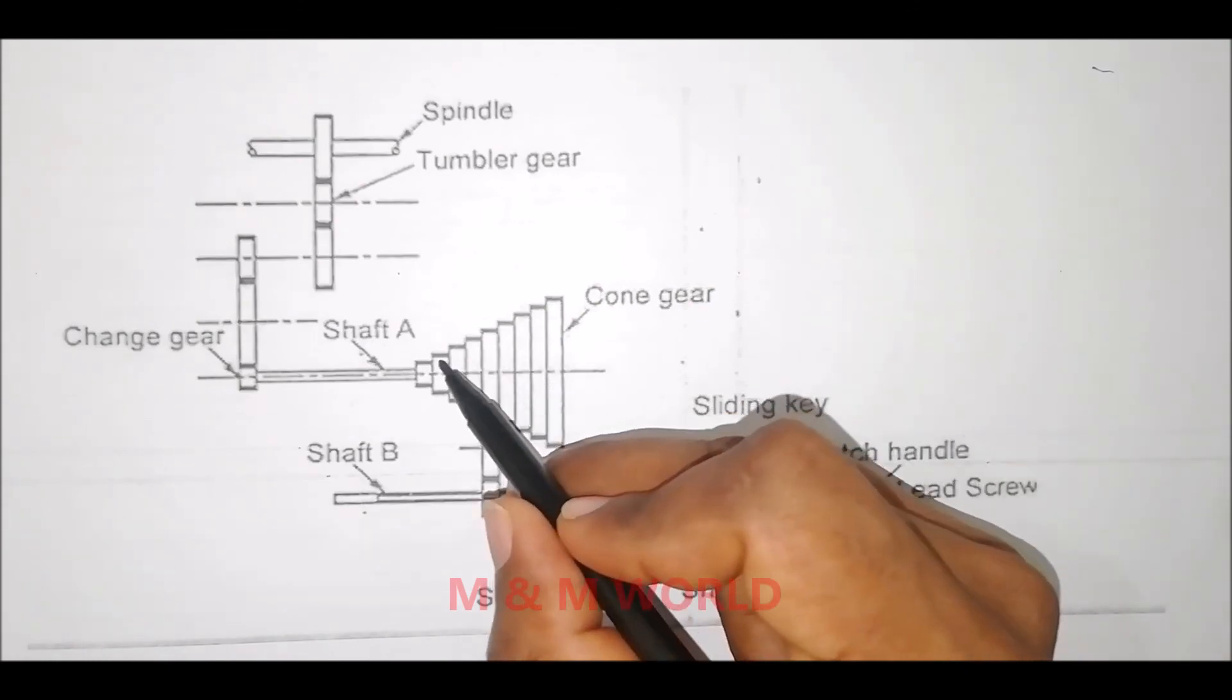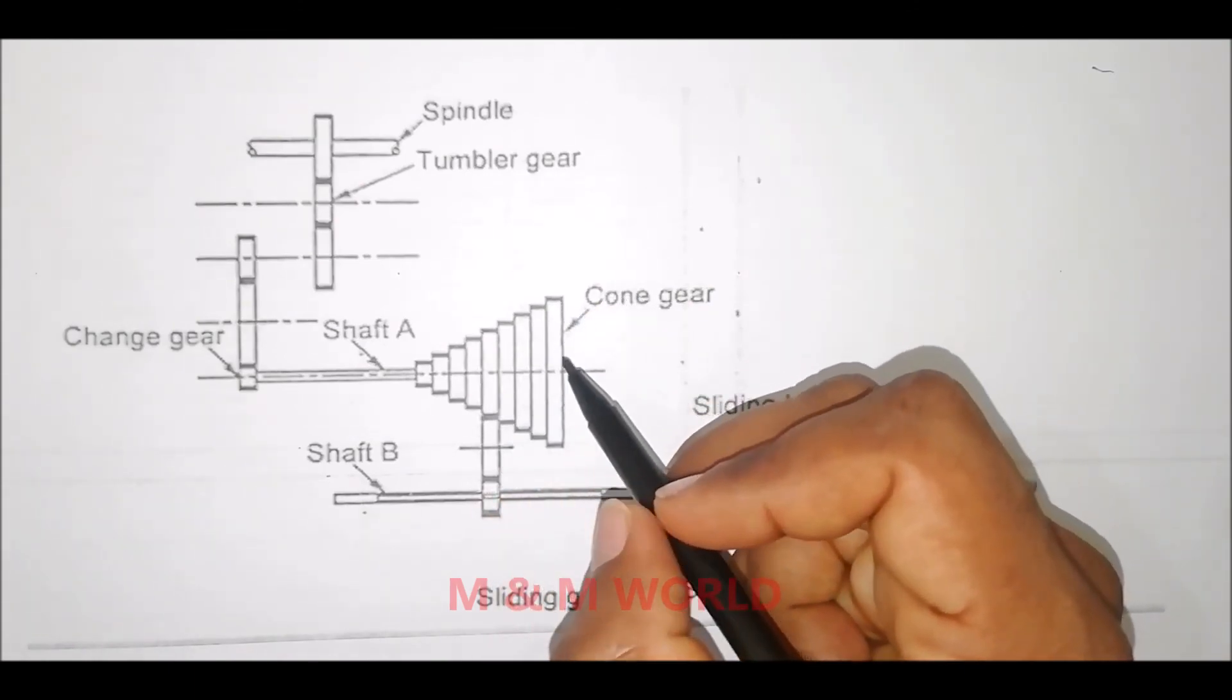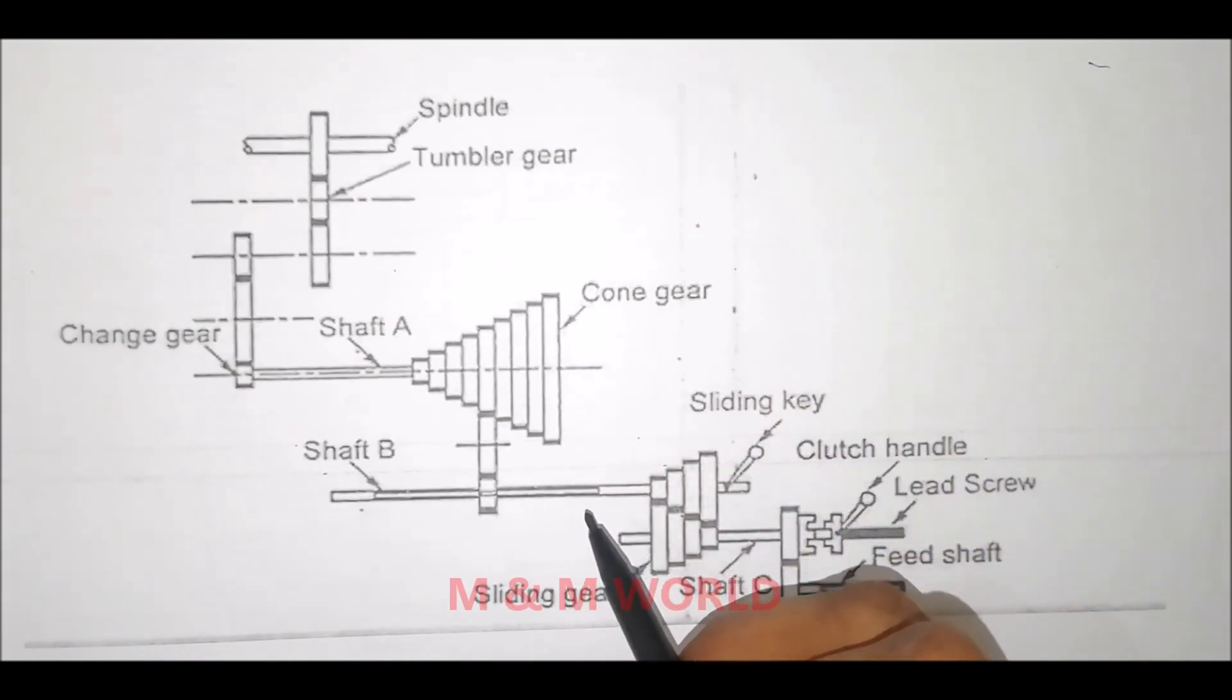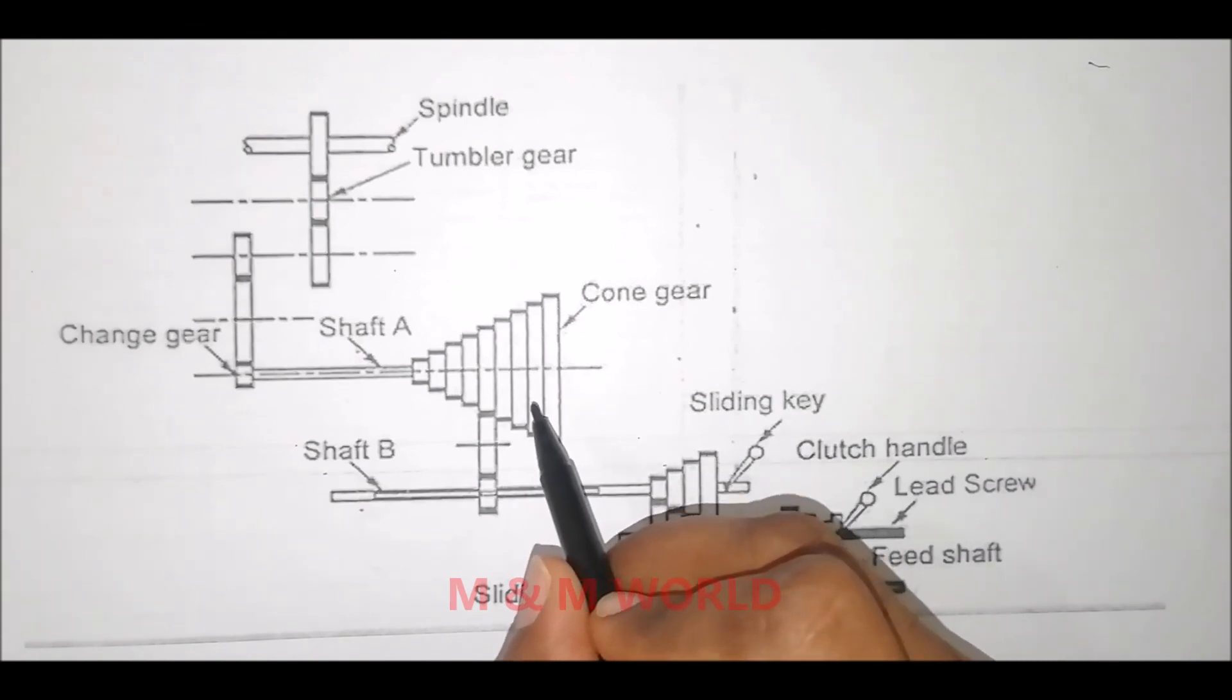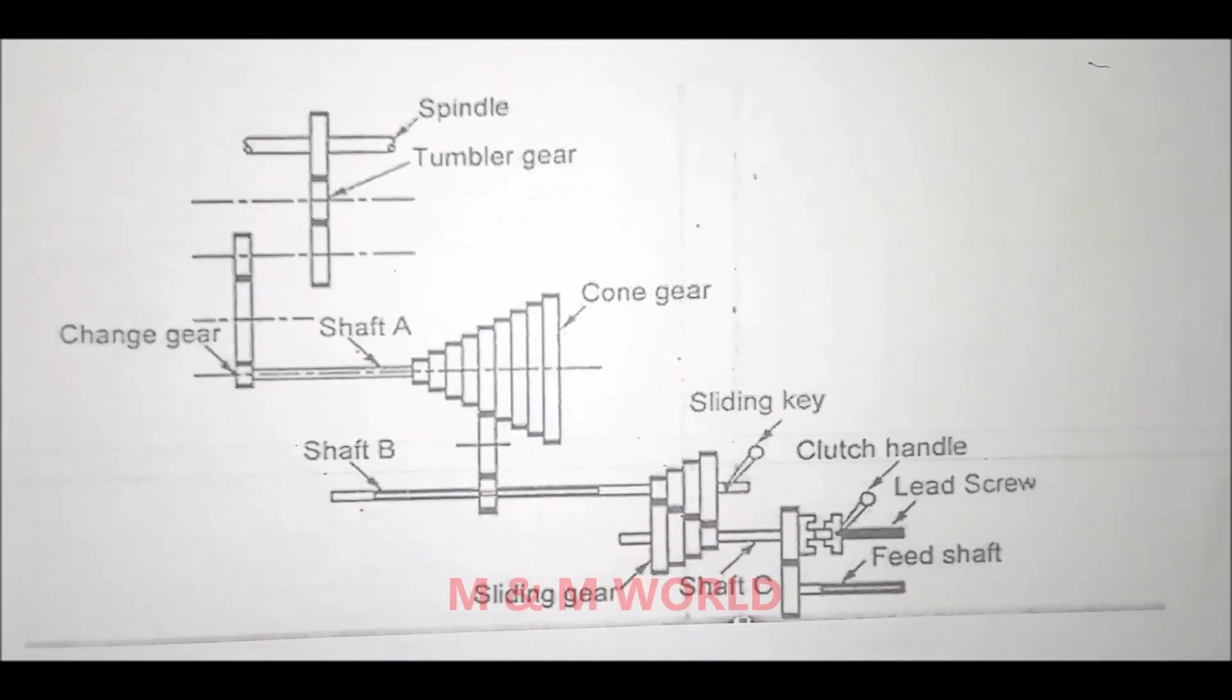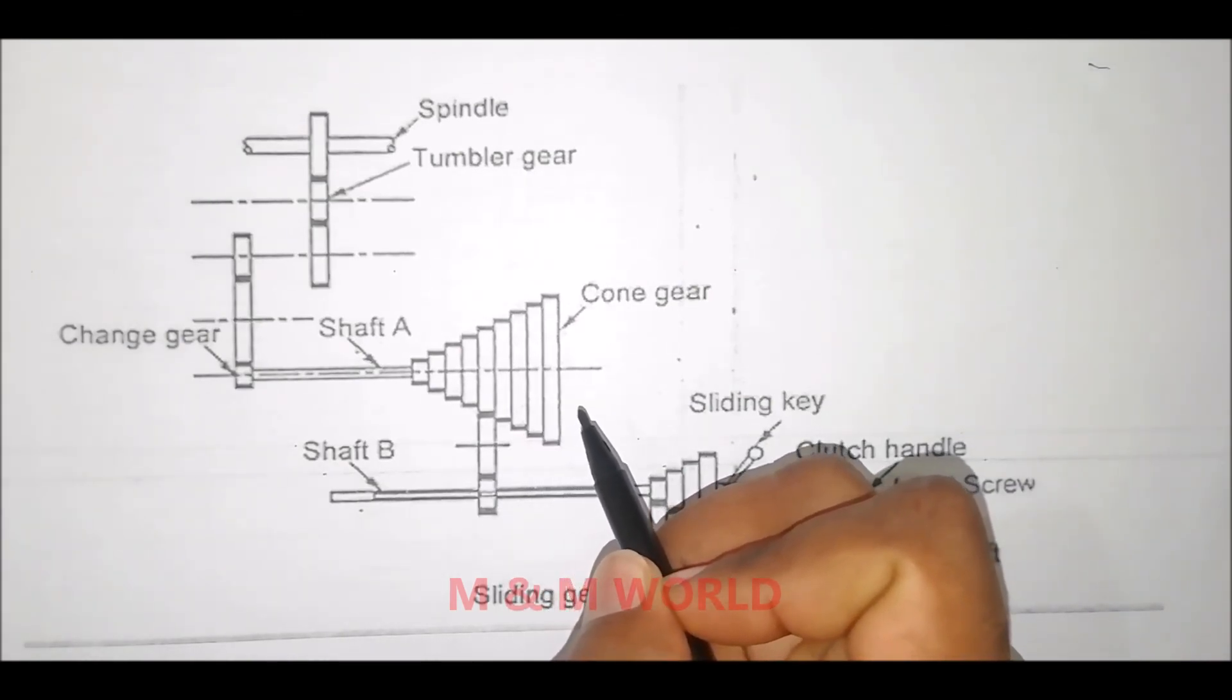Shaft B can rotate at nine different speeds. With the use of four other additional gears on shaft B and on shaft C, the shaft C can receive nine into four, that is 36 speeds.